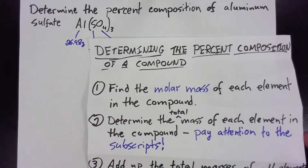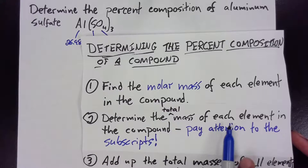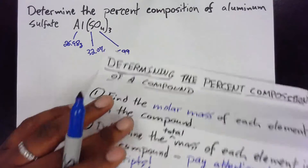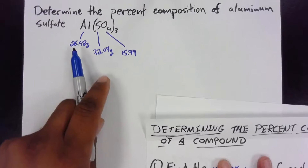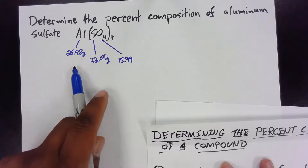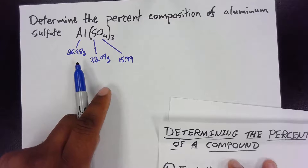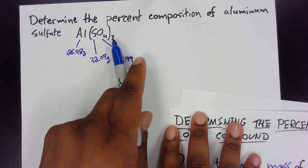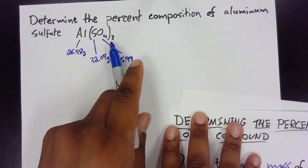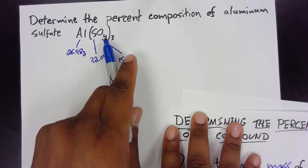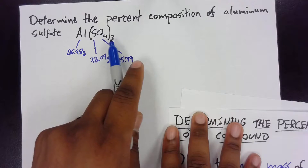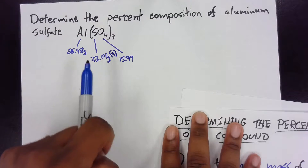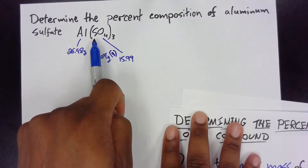Next, we want to determine the total mass of each element in the compound, paying attention to the subscripts. Aluminum doesn't have a subscript, which means there's just one aluminum atom, so the total aluminum is going to be 26.98 grams. Our sulfur molar mass is 32.07, but the sulfur is inside parentheses with a three outside, meaning there are three of that ion — three sulfurs — so we multiply 32.07 by three.